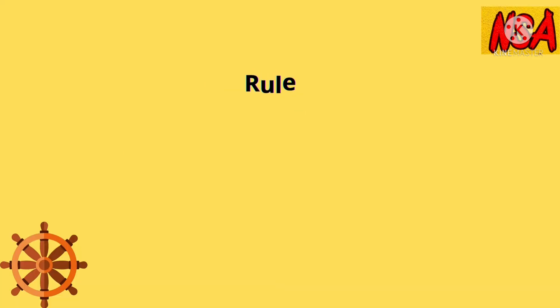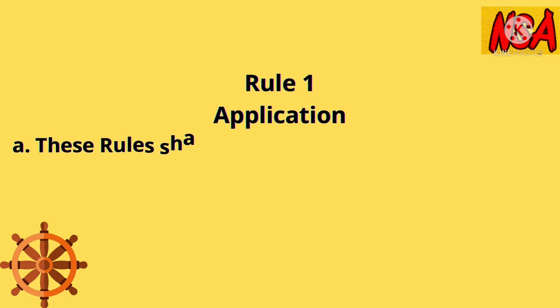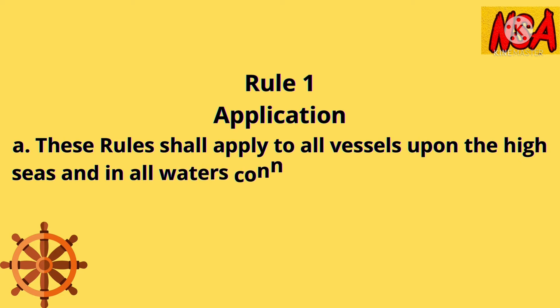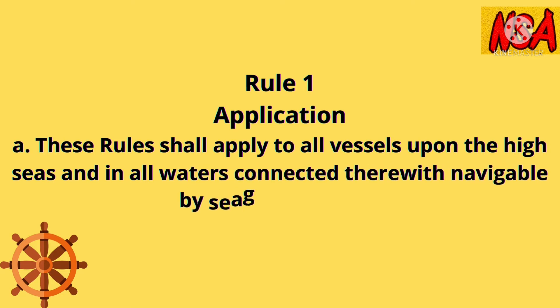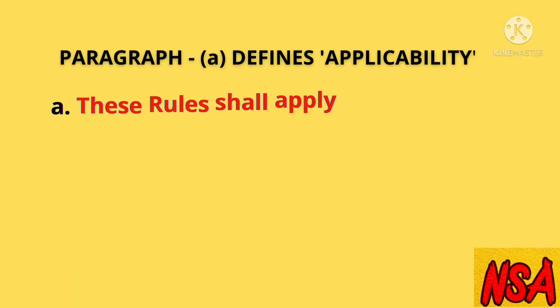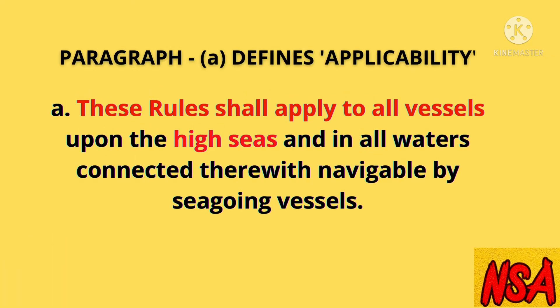Rule 1. Application. Paragraph A: These rules shall apply to all vessels upon the high seas and in all waters connected therewith navigable by seagoing vessels. Paragraph A defines the applicability that these rules shall apply to all vessels. You will learn the definition of vessel in Rule 3.